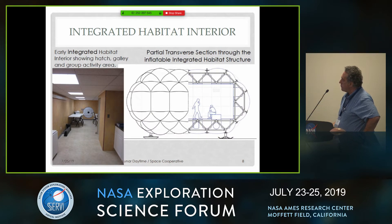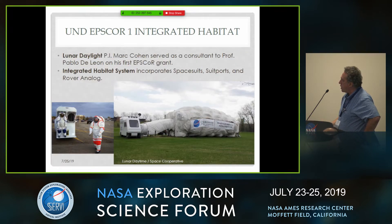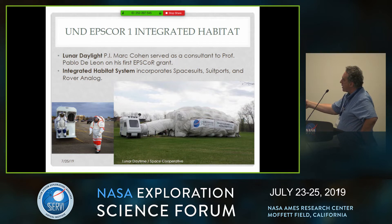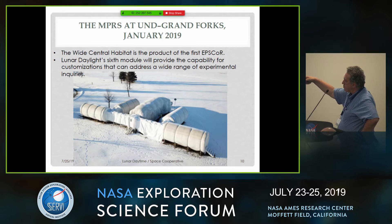This is a view of the early phase of the first EPSCore grant where the university built this analog habitat to simulate an inflatable, with space truss elements holding a rigid frame around which the inflatable was attached. This was a view of the first deployment exercise, which was the summer of 2014. The integrated habitat system incorporated spacesuits, suit ports from my patent, and the rover analog. This is what it looked like in January of this year with five elements; the original inflatable simulated habitat is the largest one in the center.